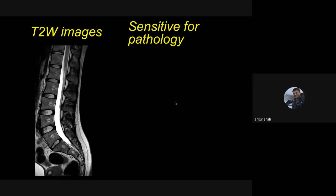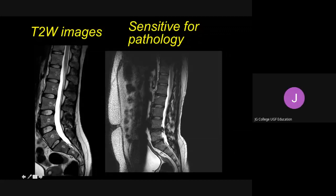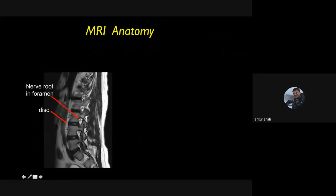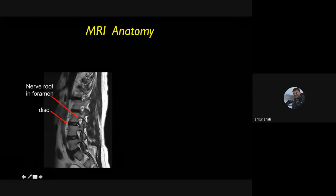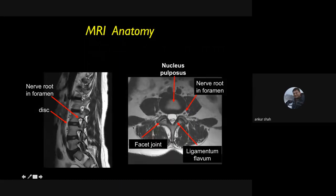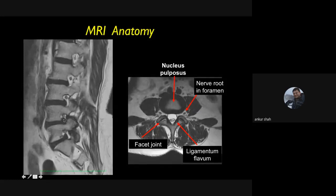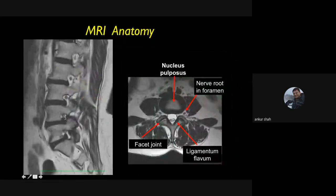On T2 weighted images, disc degeneration and nerve root compression are well demonstrated. The prolapsed intervertebral disc compressing the neural theca and nerve roots is clearly seen. On sagittal lateral cuts, nerve roots exiting from the neural foramen can be identified with normal fat between the nerve root and disc, indicating no compression. On axial plane, one can compare a normal nerve root with a disc extending into the foramen, causing significant compromise of the neural foramen and nerve root compression — many times this is the cause of patient's pain.